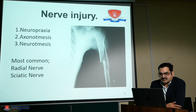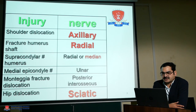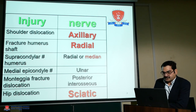The most common nerve injuries are radial nerve, most commonly seen in fracture of the shaft of the humerus, and sciatic nerve, seen in fracture dislocation of the hip. Other examples: shoulder dislocation is associated with axillary nerve injury; supracondylar fracture may be associated with radial or median nerve injuries; medial epicondyle of the humerus can lead to ulnar nerve injury; Monteggia fracture dislocation is associated with posterior interosseous nerve injury; and hip dislocation can be associated with sciatic nerve injury.